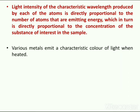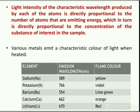Various metals emit a characteristic color of light when heated. When sodium is heated, it produces a yellow color flame and the wavelength of emission is 589 nanometers. For potassium, the color produced in the flame is violet while the wavelength of radiation is 766 nanometers. For barium, the color produced is lime green and the emission wavelength is 554 nanometers. For calcium, the color produced is orange and the wavelength of radiation is 662 nanometers. For lithium, the wavelength produced is 670 nanometers while the color produced is red.